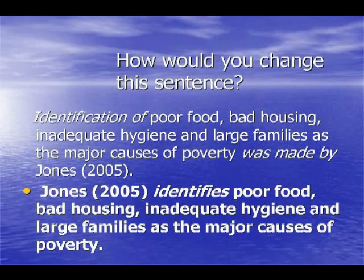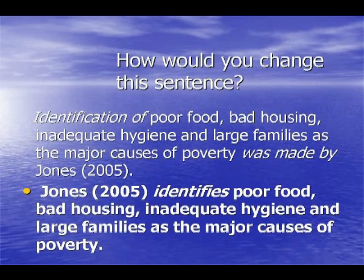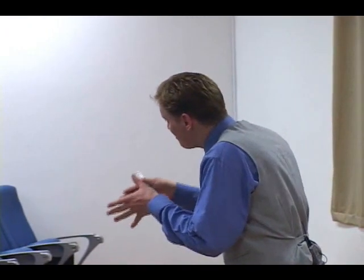Let's look at how we could do that. This sentence came from a paper I modified recently: 'Identification of poor food, bad housing, inadequate hygiene, and large families as the major causes of poverty was made by Jones.' This is a passive sentence — I know because the word 'by' appears, indicating Jones is the subject but placed at the end. To make this clearer, move Jones to the beginning: 'Jones identified poor food, bad housing, inadequate hygiene, and large families as the major causes of poverty.' Simpler, shorter, and immediately clear who did the action.